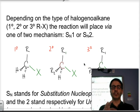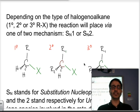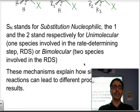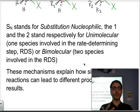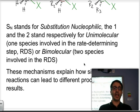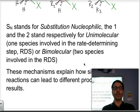Secondary halogealkanes have a mix of mechanisms — we'll discuss those briefly at the end. The two mechanisms are SN1 and SN2. The letters SN stand for substitution nucleophilic, meaning it's a substitution caused by the attack of a nucleophile. The 1 and 2 represent the number of species involved in the rate-determining step — the slowest step of the mechanism. SN1 is unimolecular (one species in the slowest step) and SN2 is bimolecular (two species involved).